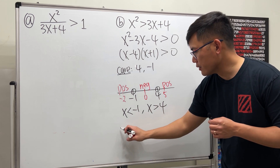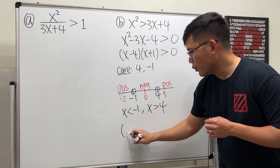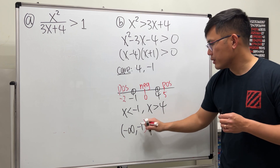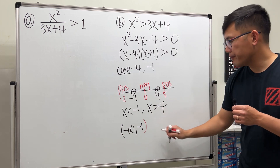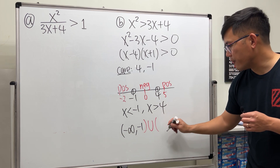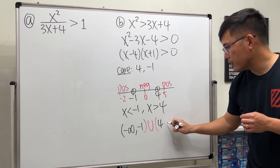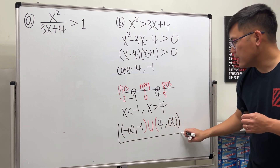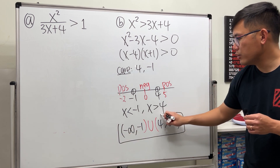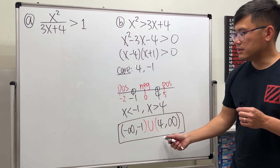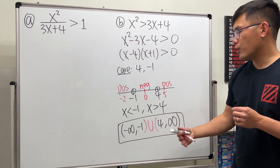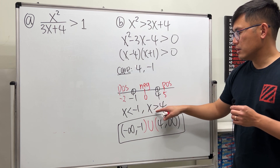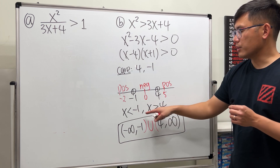The answer is x < -1 or x > 4 — two separate intervals. In interval notation: (-∞, -1) ∪ (4, ∞). Depending on the class level, you may present this in inequality or interval notation, but don't forget both forms.